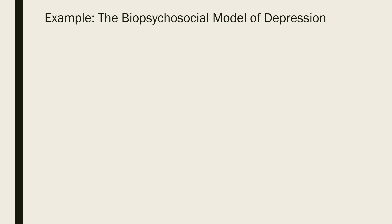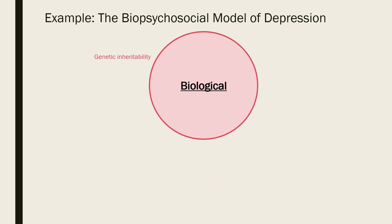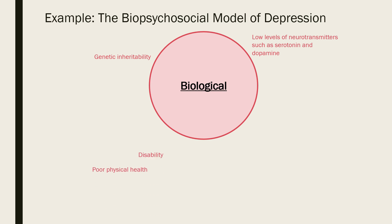Let's now examine a specific psychological disorder using the biopsychosocial model. The example we'll use is depression. Biological influences could include genetic inheritability, as depression can run in families. Research is also being conducted to identify genes that contribute to depression. Low levels of neurotransmitters such as dopamine and serotonin also contribute to depression in some people. Dopamine creates positive feelings associated with reward and reinforcement and serotonin is the feel-good chemical in the brain. Many antidepressant medications aim to increase serotonin levels in the brain. Having a disability, particularly if the individual is lacking social support, and poor physical health, whether it is a chronic illness or a condition like obesity, can also contribute to depression.